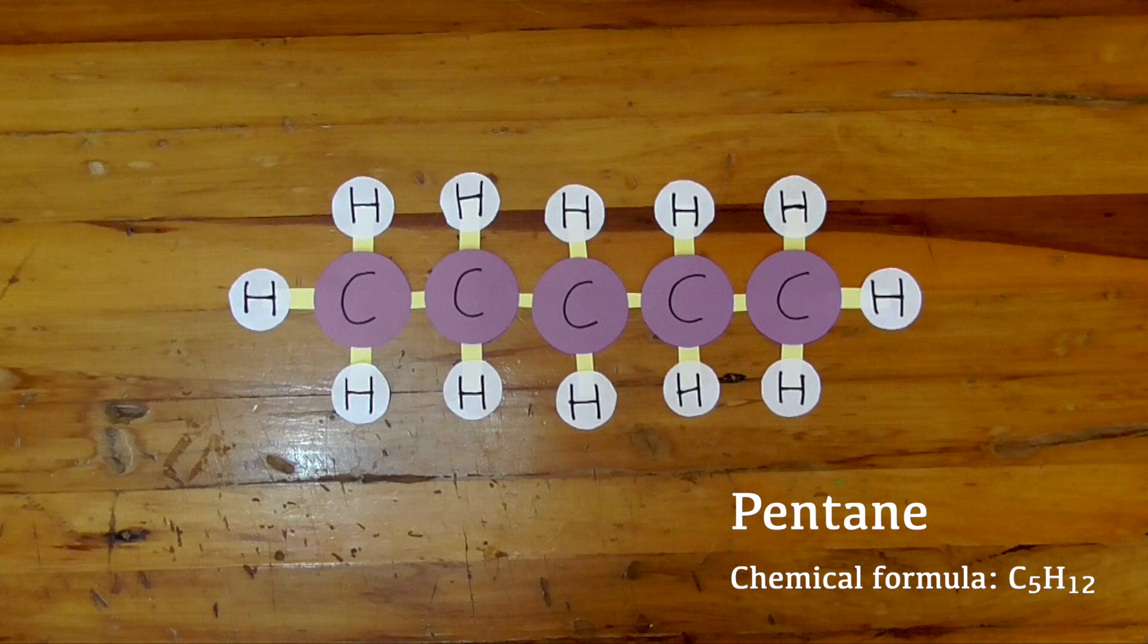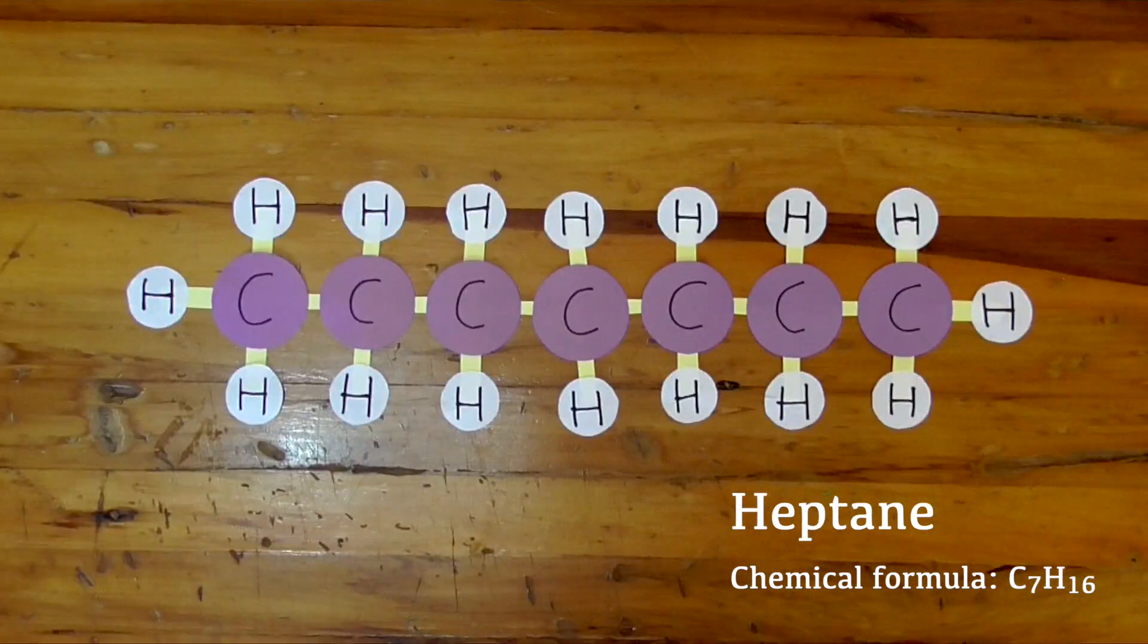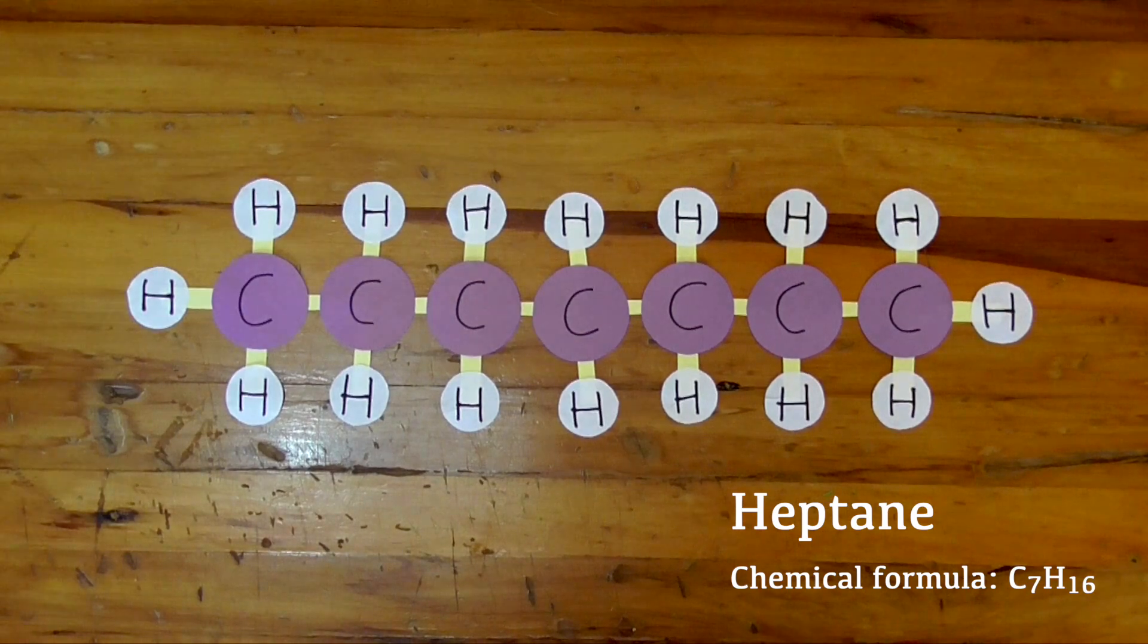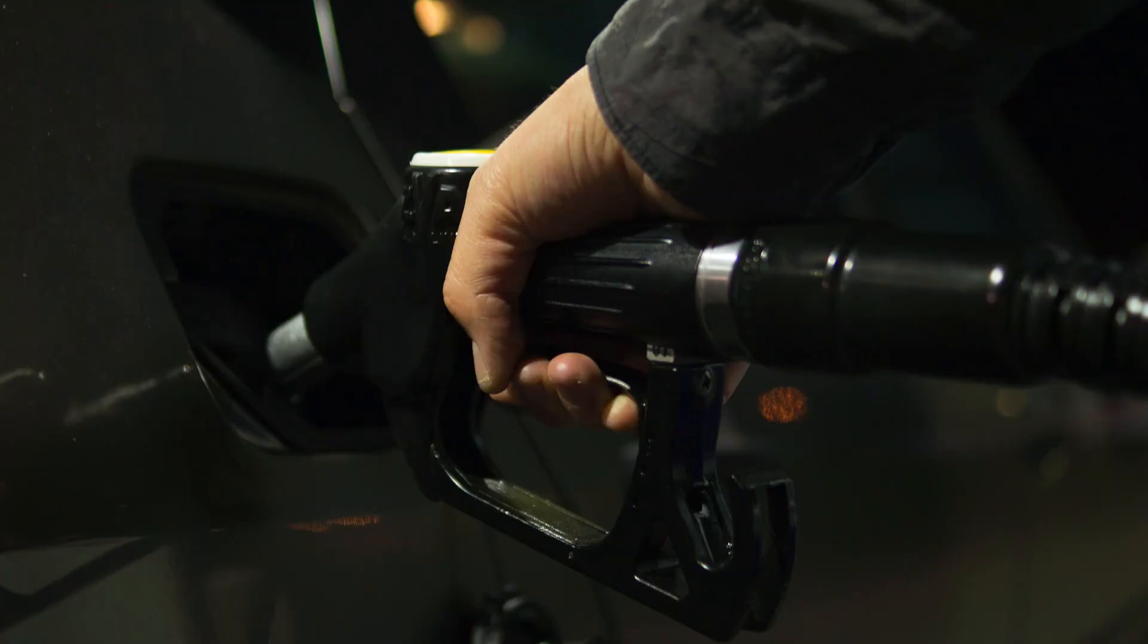If we add more carbon atoms, we get longer, chain-like hydrocarbons. These specific ones are usually found as liquids and some of them, notably octane, power cars and other motor vehicles. Their specific names aren't important at this point, but I will talk about naming conventions in future videos.